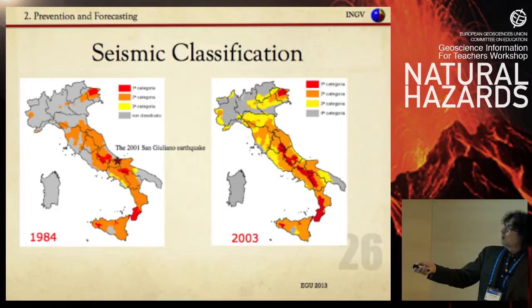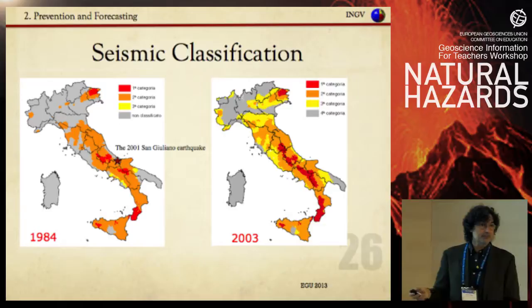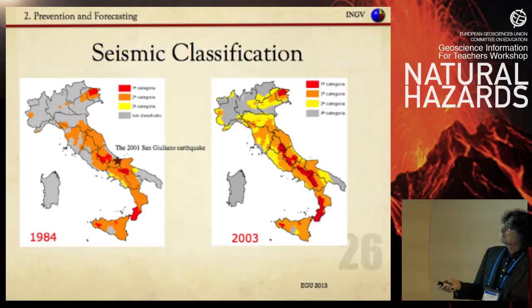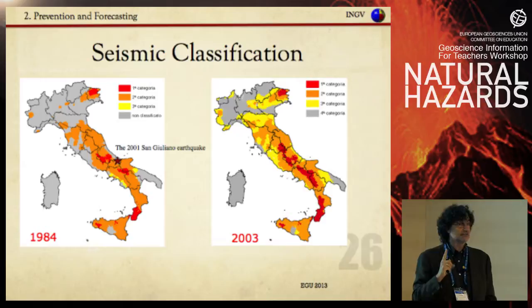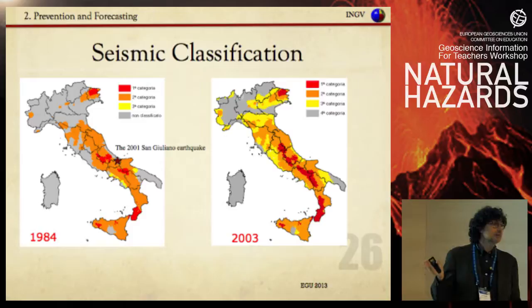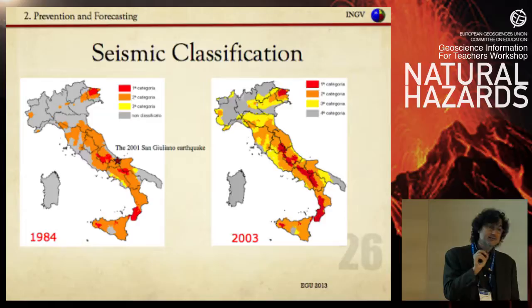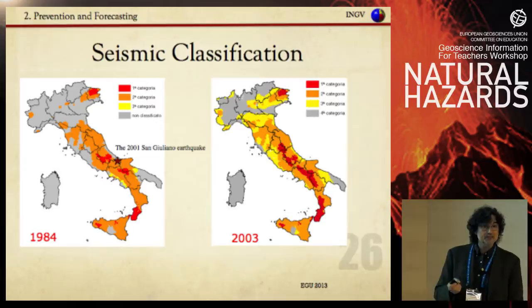Due to this, in 2003 a new seismic law and seismic classification was enacted — now you see no unclassified areas, so all Italian territory is classified and in principle any new building must be built accordingly. I want to highlight two things: first, L'Aquila has been category one since 1906 — already recognized as one of the highest seismic risk areas in Italy. Second, this only applies to new buildings, but in Italy 80 percent of buildings were built before 1980. We have 20,000 schools hosted in buildings built before 1980, which means they followed no rules.